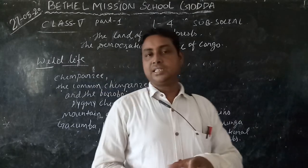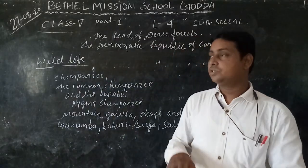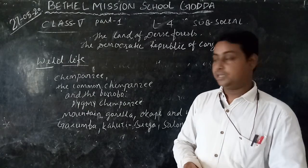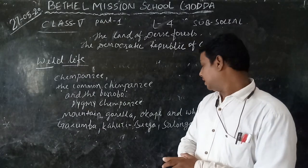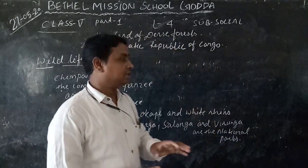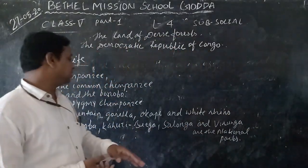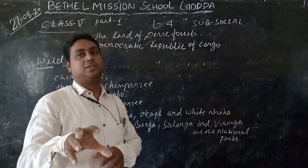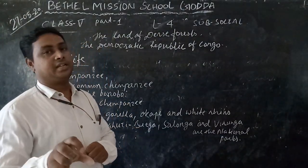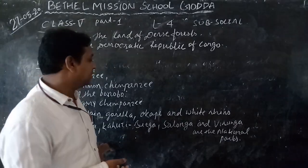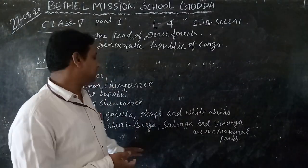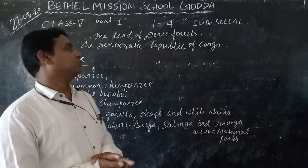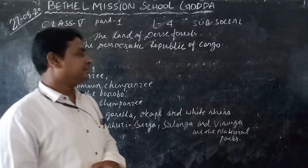There are important national parks in this region: Garumba, Kahuzi-Biega, Salonga, and Virunga. These are the national parks of the Democratic Republic of Congo, which serve as wildlife reserves in Africa.